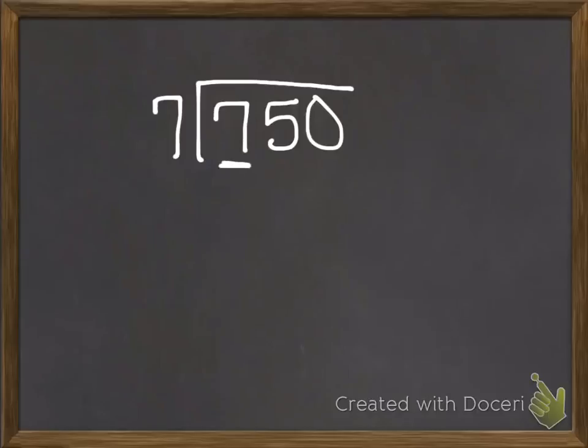So I say I have 7 apples. Can I put that into a group of 7? Yes. How many groups? You can get 1. Because you guys know 7 times 1 is 7. So now I'm going to subtract. 7 minus 7 will give you 0.